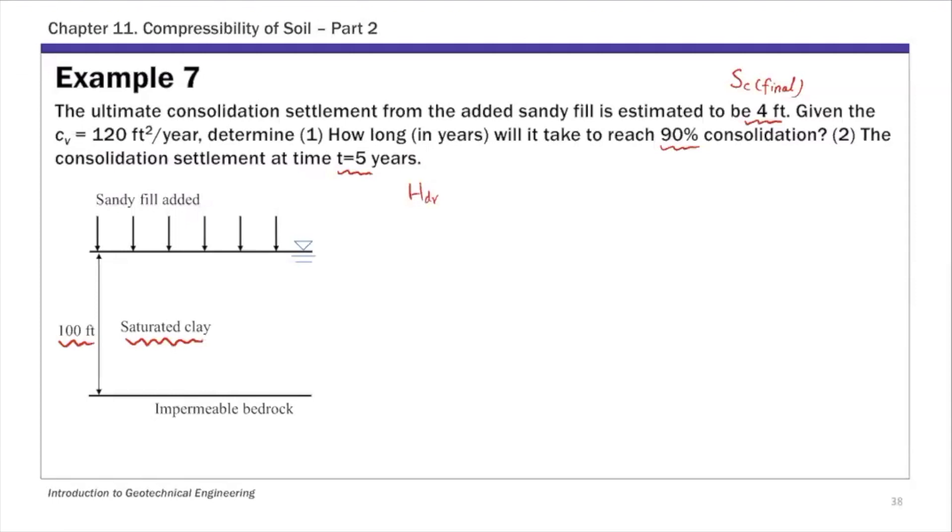As a reminder, HDR is the maximum drainage distance, basically the longest distance water travels to drain in your system. For this setup we have sandy fill on top, which is permeable, and we have an impermeable bedrock layer at the bottom of this clay layer. This means the only way water drains is through the sandy fill on top.